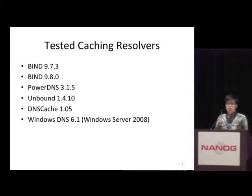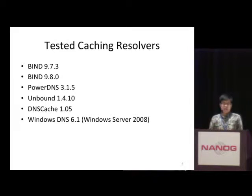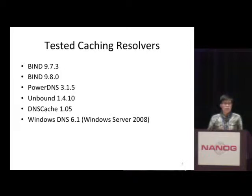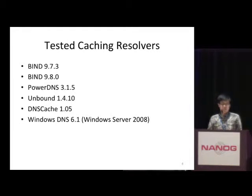We have tested five different implementations of caching resolvers, including BIND, PowerDNS, Unbound, DNS Cache, and Windows DNS. For BIND, we have tested two versions: BIND 9.7 and BIND 9.8.